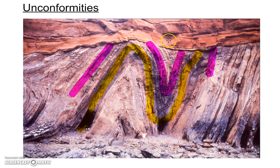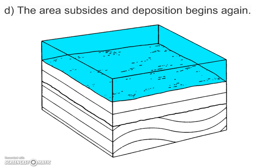On top of this, we have more layers that are still somewhat horizontal. So we now know that something happened to form new layers on top of our fold. New layers form underwater, so the whole area had to subside again — sink back down underwater — and deposition began again, giving us new layers of sediment. Those are the four steps that created this unconformity.